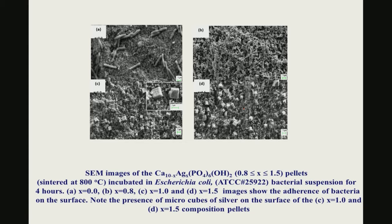SEM images of the sintered microstructure at different substitution levels, particularly in the range of 0.8 to 1.5, show a typical geometrically cubic-shaped silver crystal present in the microstructure. The green micron bar indicates one micron, so individual crystals are one micron in size. These one-micron silver crystals are dispersed or embedded in the Ca₁₀₋ₓAgₓ(PO₄)₆(OH)₂ ceramic.